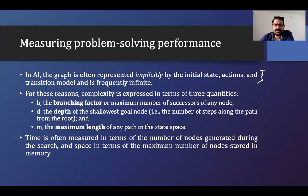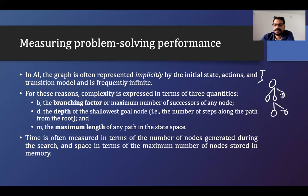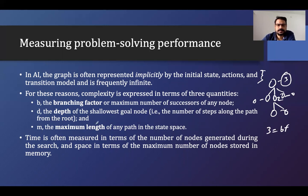For this reason, complexity is expressed in terms of three quantities. The first one is the branching factor — the maximum number of successors of any node. When we are talking about graph structure, we have a branching factor, which means the maximum number of successors of a node. For example: this node has three successors, this one zero, this one two, this one zero. The maximum number of successors is three. So three is my branching factor, denoted as B.